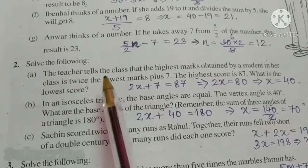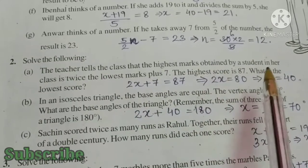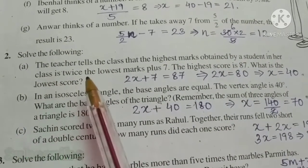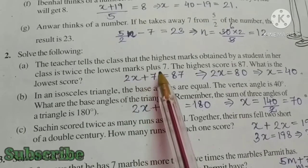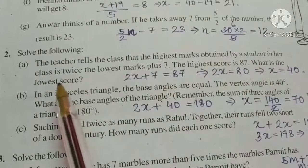A part, the teacher tells the class that the highest marks obtained by a student in her class is twice the lowest marks plus 7. The highest score is 87. What is the lowest score?